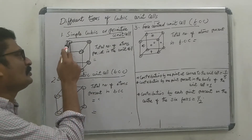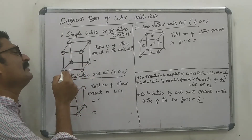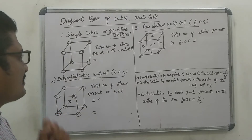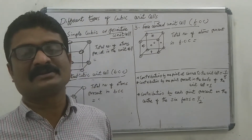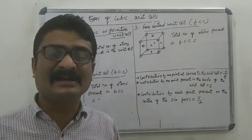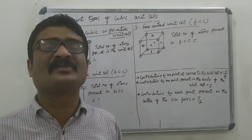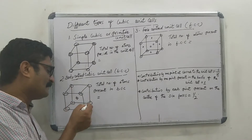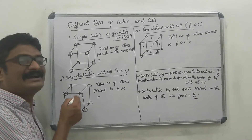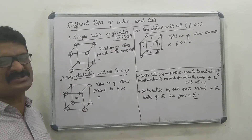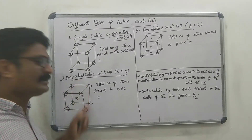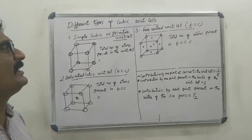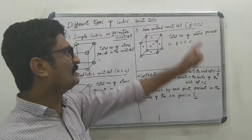In simple cubic unit cell, the atoms are present at the eight corners of the unit cell. In BCC, the atoms are present at the eight corners and also at the center of the unit cell. The third one is face-centered cubic unit cell, short form is FCC.